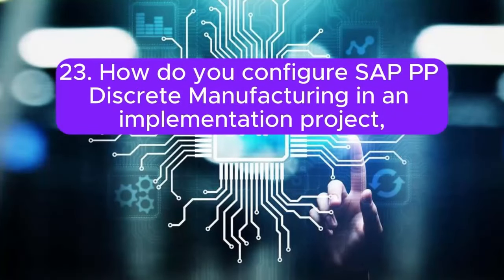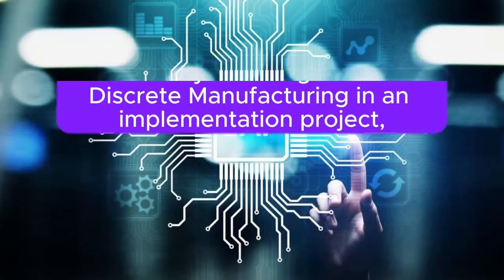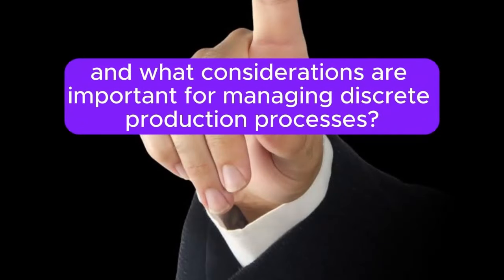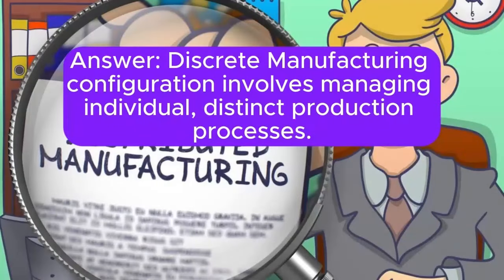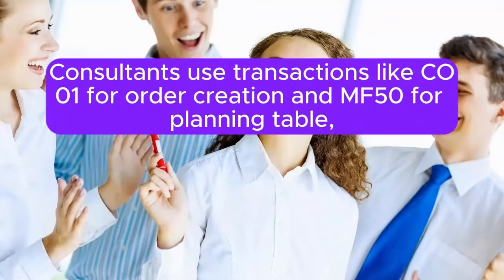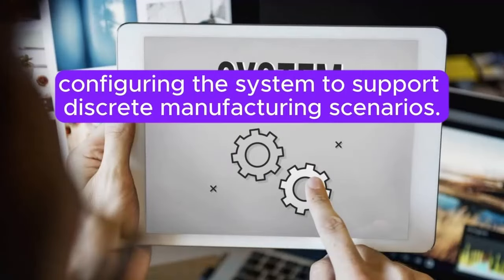Question 23: How do you configure SAP PP discrete manufacturing in an implementation project, and what considerations are important for managing discrete production processes? Discrete manufacturing configuration involves managing individual, distinct production processes. Consultants use transactions like CO01 for order creation and MF50 for planning, configuring the system to support discrete manufacturing scenarios.